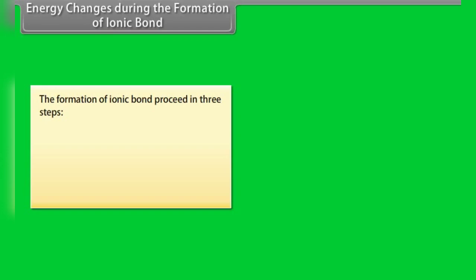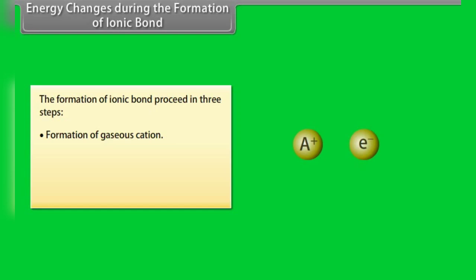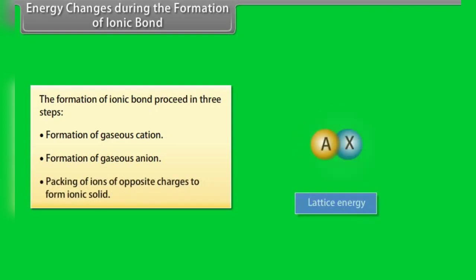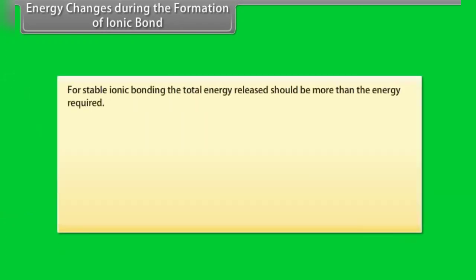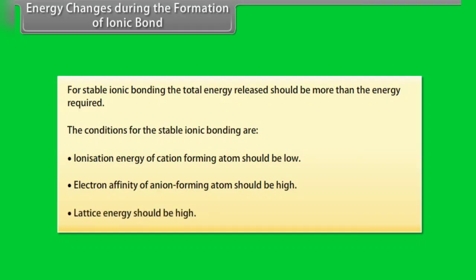The formation of ionic bond proceeds in 3 steps. Step 1: Formation of gaseous cation — the energy required is called ionization energy. Step 2: Formation of gaseous anion — the energy released is called electron affinity. Step 3: Packing of ions of opposite charges to form ionic solid — the energy released is called lattice energy. For stable ionic bonding, the total energy released should be more than the energy required. The conditions are: ionization energy of the cation-forming atom should be low, electron affinity of the anion-forming atom should be high, and lattice energy should be high.